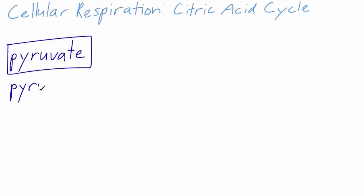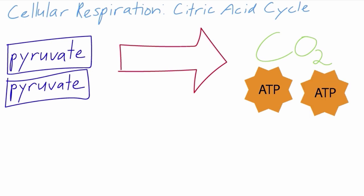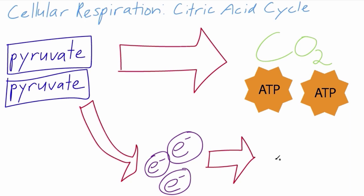The two pyruvates are processed, producing two more ATP as well as carbon dioxide. This is the carbon dioxide that we breathe out when we exhale. While the pyruvates are being processed, the citric acid cycle takes electrons from the pyruvates and adds them to carrier molecules that carry the electrons to the next step in respiration.